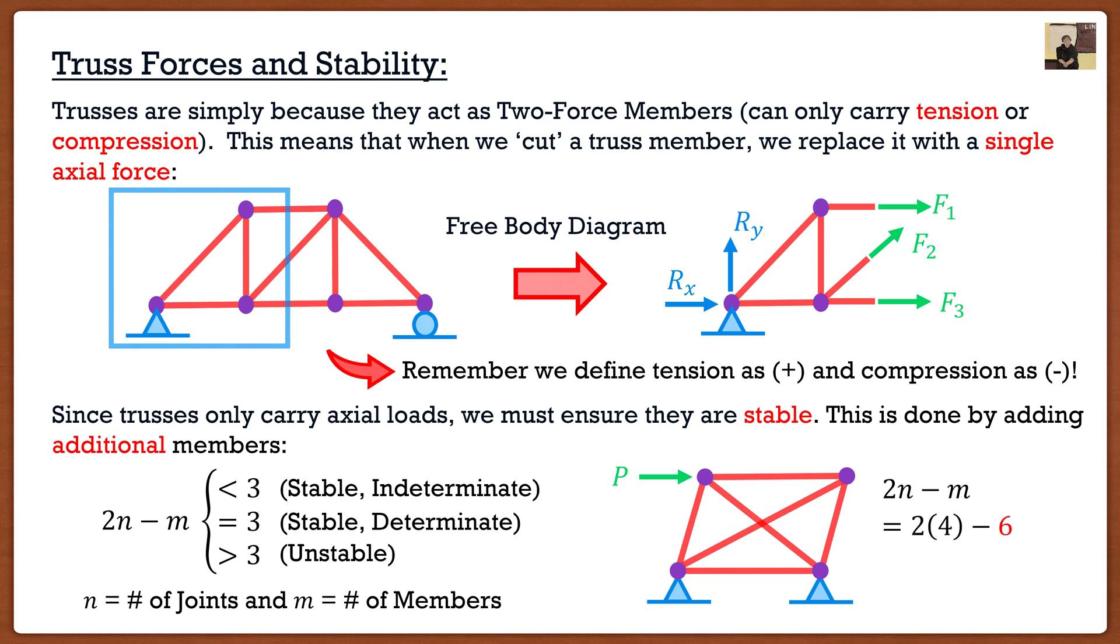And if we were to do the math, 2n minus m, well, we got 2 times 4, but this time minus 6. We have 6 members. So this is equal to 2, which is less than 3. So it's stable as well as indeterminate. So if we were to look here, we know it's stable, but we actually can't solve it using just our equilibrium equations. We have to get into a bit more advanced calculations that are actually involving the material properties of the truss itself. Something outside of this course, all you guys would need to know is that this is stable.